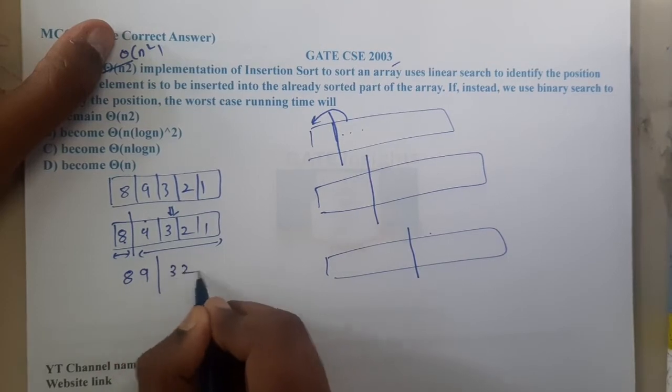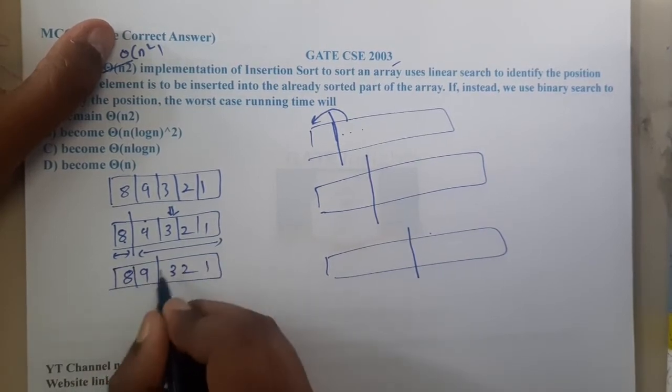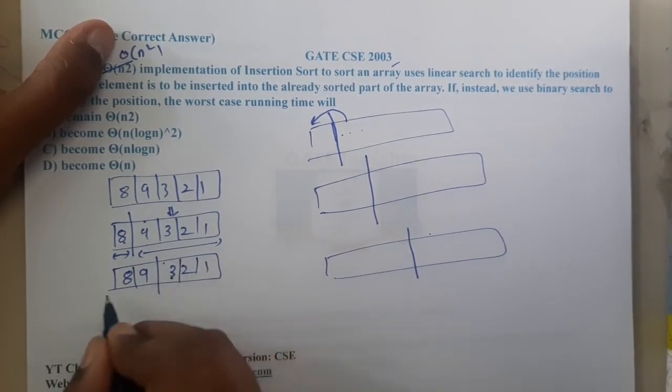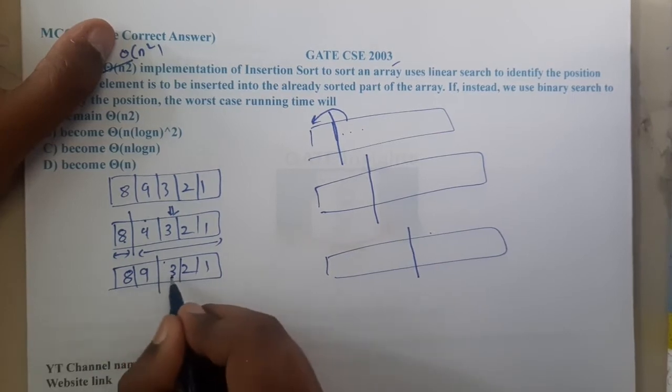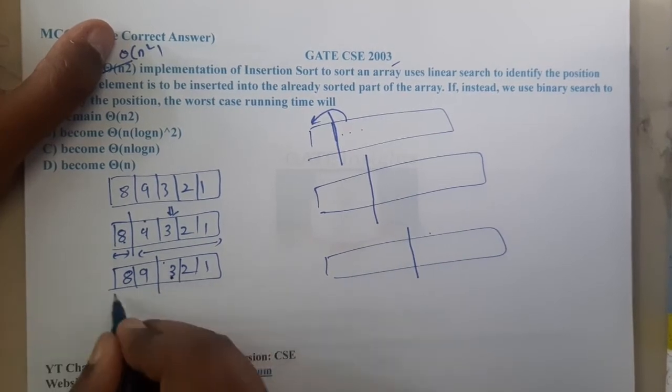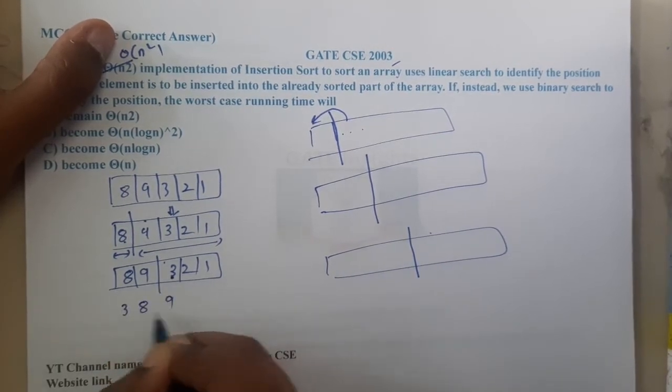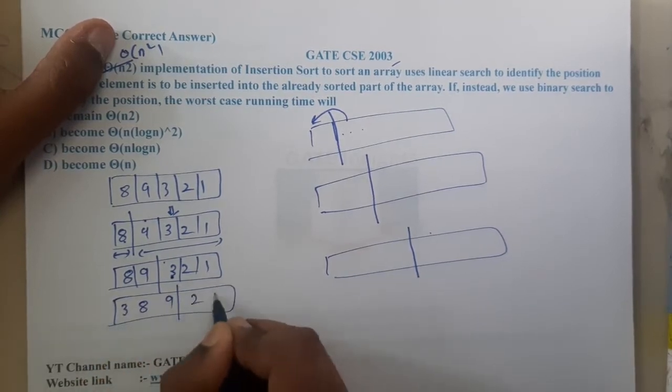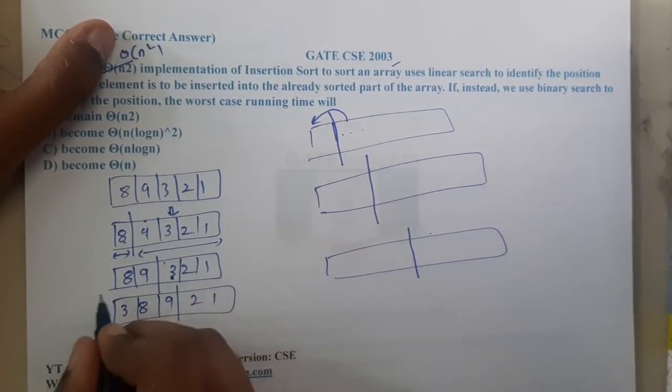Similarly, now I will take 3 and I will place it in its own location. So indirectly, 3 should be the least value. So 3 will come first, then 8, then 9. So now everything is sorted: 2, 1. So basically, how exactly do I know the location?